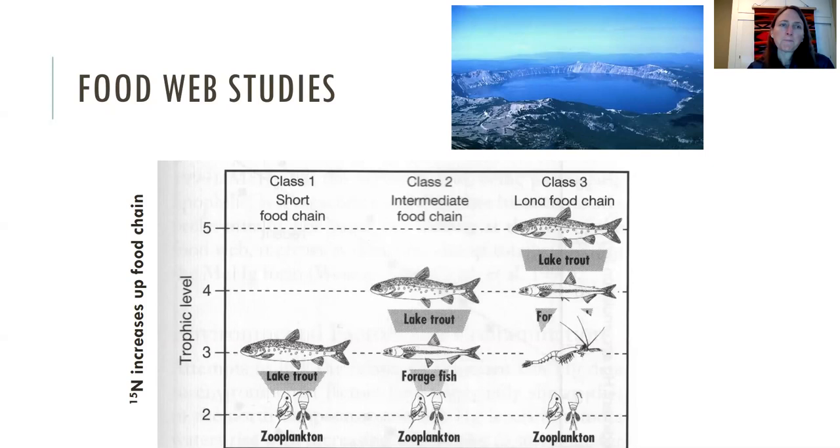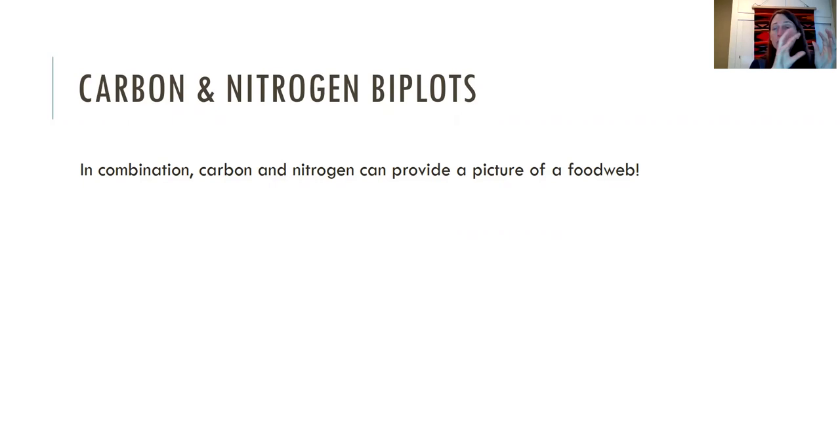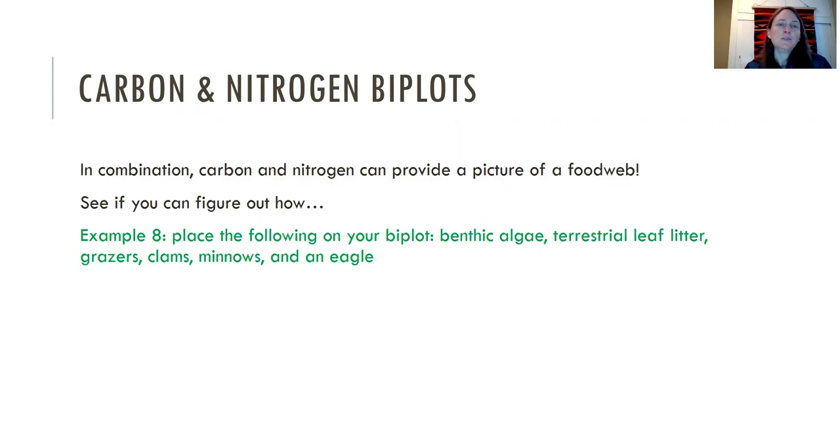Okay, so the cool thing about carbon and nitrogen together is the carbon tells you you are what you eat, and the nitrogen tells you where you are in the trophic position. And so in combination, they actually provide this two-dimensional picture of a food web. And so see if you can figure out how to put all of these things on your plot: benthic algae, terrestrial leaf litter, grazers, clams, minnows, and an eagle, and see if you can build a two-dimensional food web. Pause the video if you want.